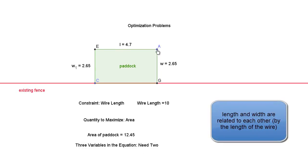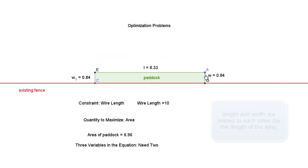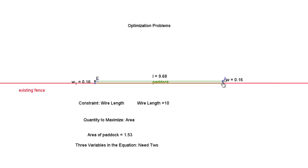Now I can see as I watch the area of the paddock, when it's a really long skinny paddock the area goes down, eventually it goes to zero. Somewhere in the middle here I'm getting up to my maximum area and then as I make it wider and wider, once again the area goes down to zero.